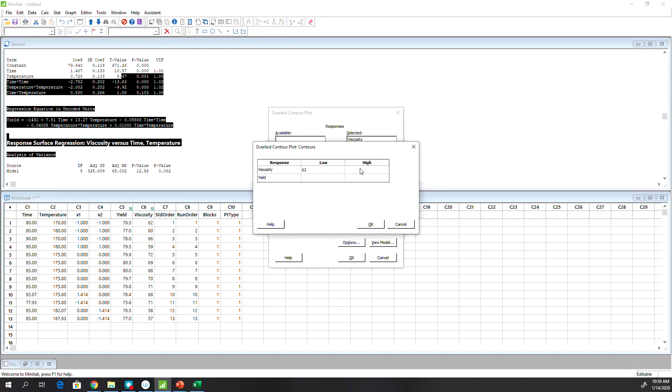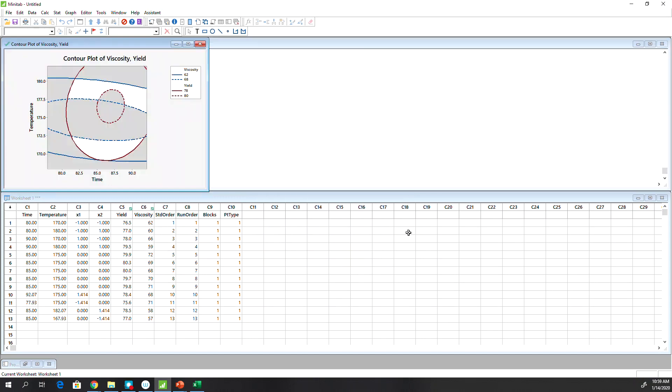It will not produce an exact value. Let's put it 62 and 68, three low, three high. So it produces a range. And then yield is around 80 is the highest. So I'm just going to be around these two numbers. Now you can play with it until you see a nice surface. Data will also give you some clue.